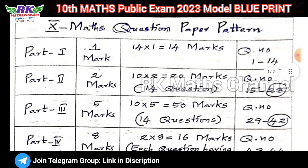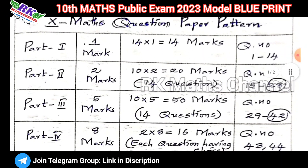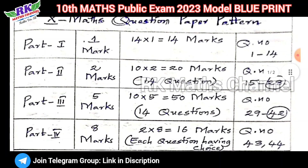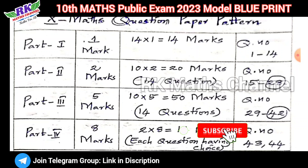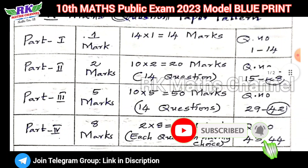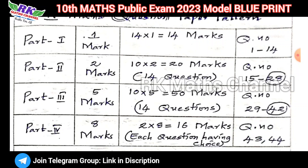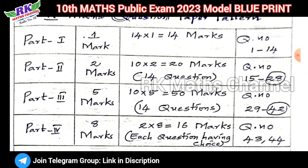Question paper pattern: Part 1 is 14 marks. Question numbers 1 to 14 are 1 mark each, totaling 14 marks. Part 2 is 2 marks each, with 14 questions — question numbers 15 to 28. Question number 28 is compulsory.